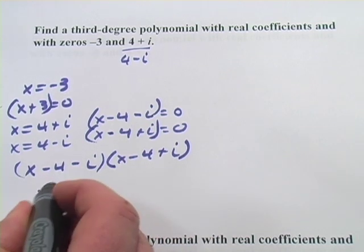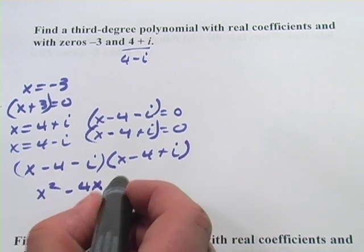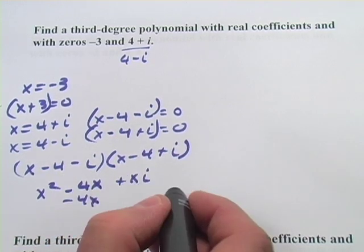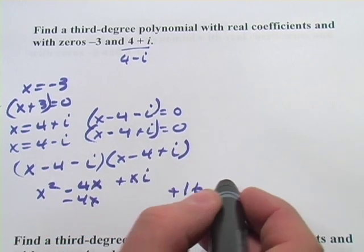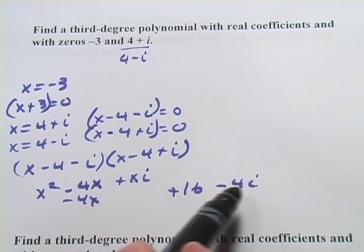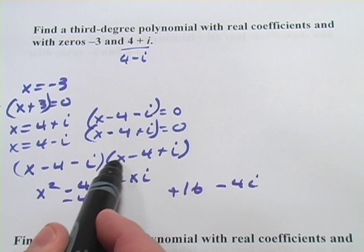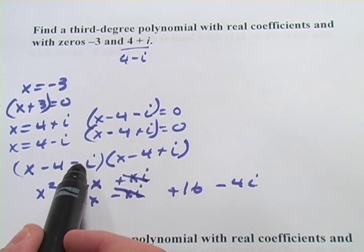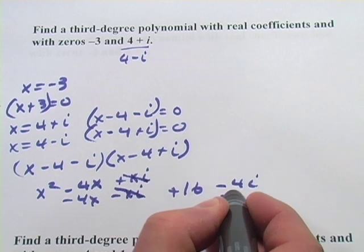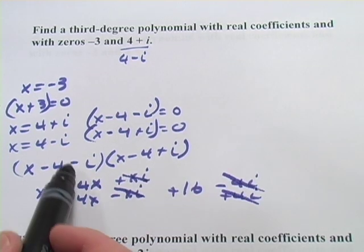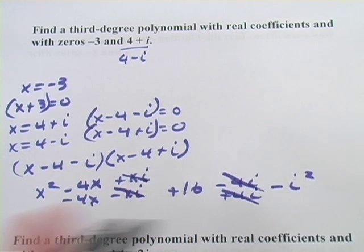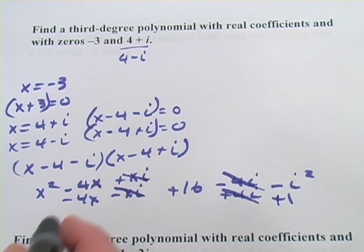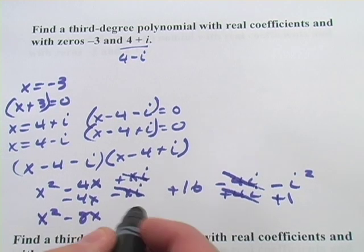x times x is x squared, x times negative 4 is negative 4x, and x times i is positive xi. Then negative 4 times x is negative 4x, negative 4 times negative 4 is positive 16, and negative 4 times i is minus 4i. Moving to negative i: negative i times x is negative xi — those two cancel. Negative i times negative 4 is positive 4i — those cancel too. And negative i times positive i is negative i squared. Since i squared equals negative 1, that becomes positive 1. Putting it all together, we get x squared minus 8x plus 17.